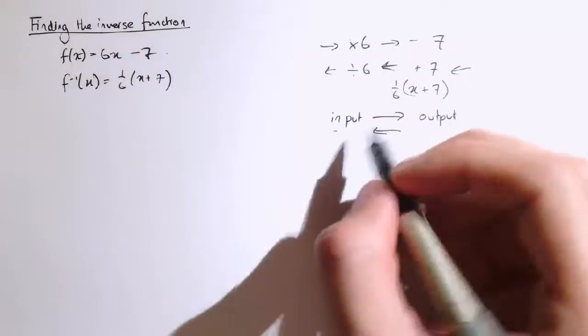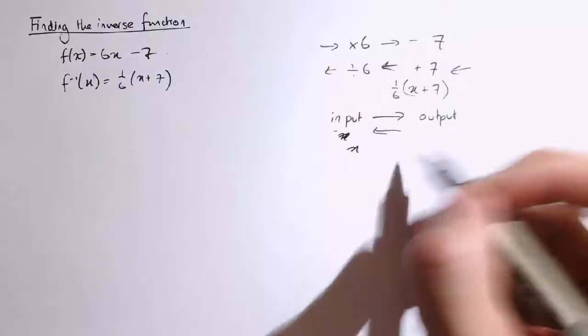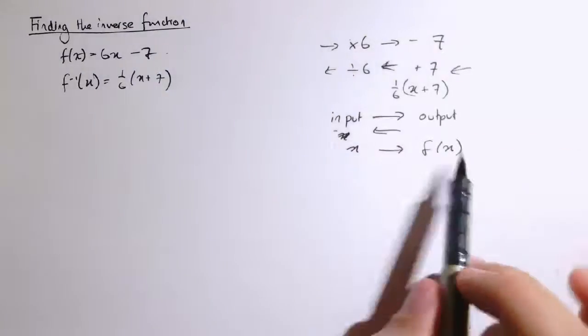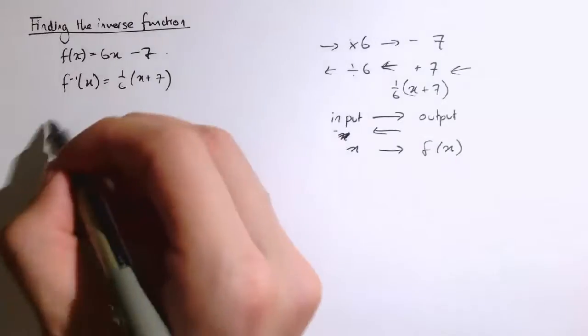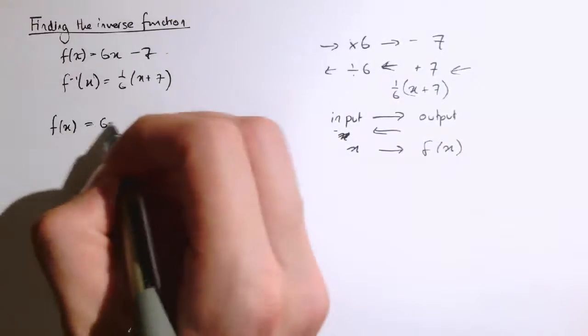So actually, if I think of starting with my x and getting out f(x), we want to go the other way around. So if I had f(x) equals 6x minus 7,